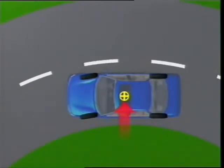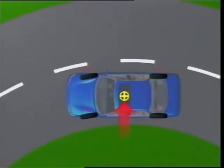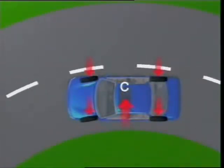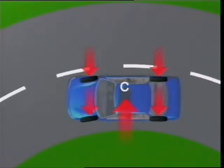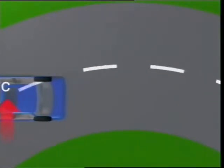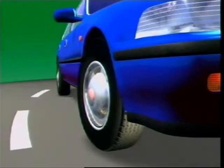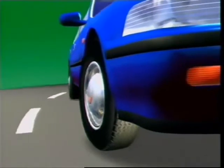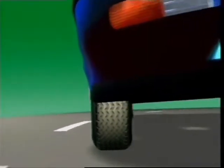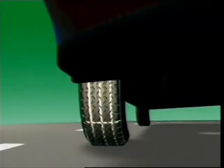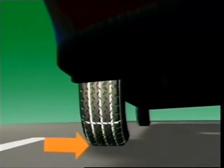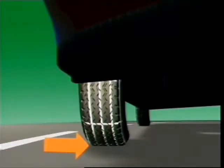During cornering, centrifugal force acts on a vehicle to produce a side force, which must be resisted by the interaction of the tyre on the road surface. The greater the side force, the greater the opposing force must be. Without this resistance, the vehicle will continue in a straight line. The pneumatic tyre provides this opposing force by being able to distort while still gripping the road. Since the tyre's construction makes it elastic, it exerts a cornering force which acts between the tread and the road surface, pulling the distorted rubber back to its normal position.